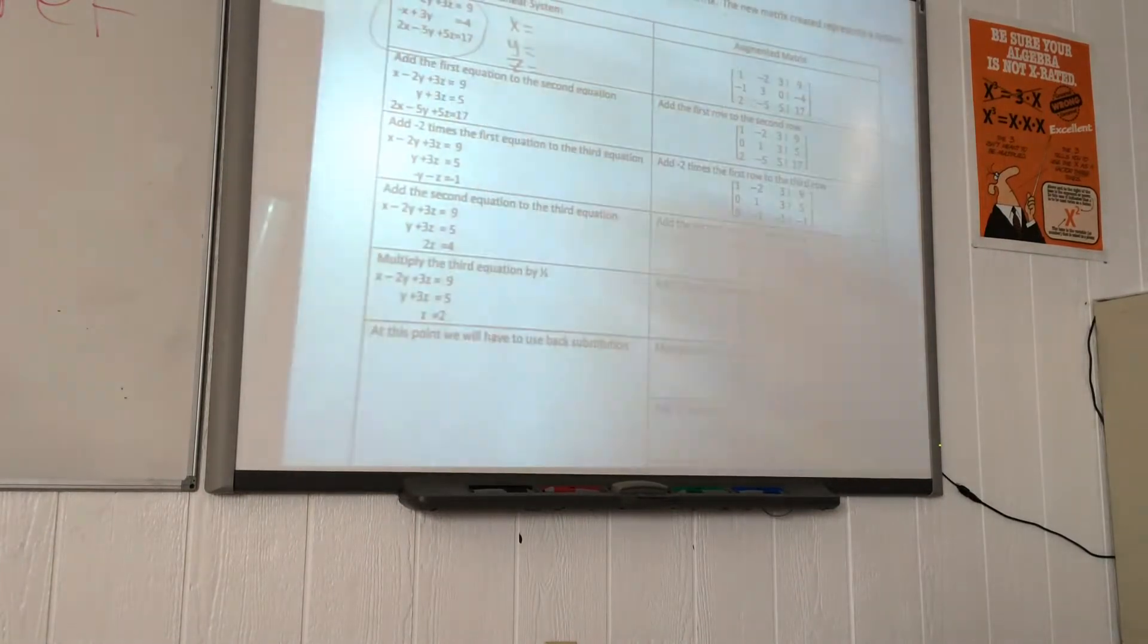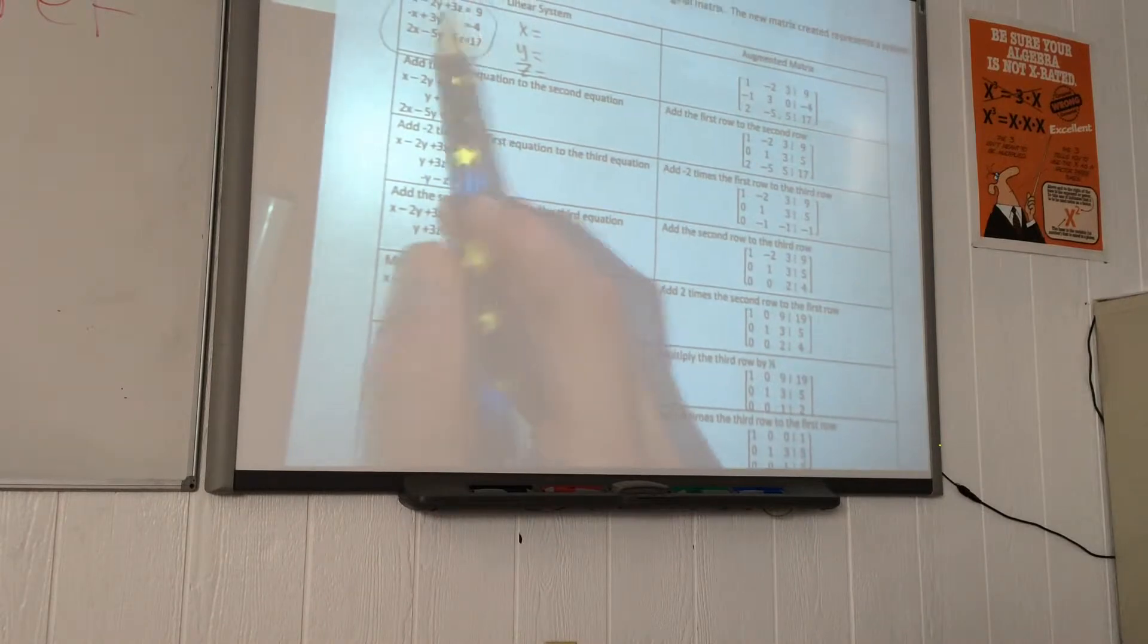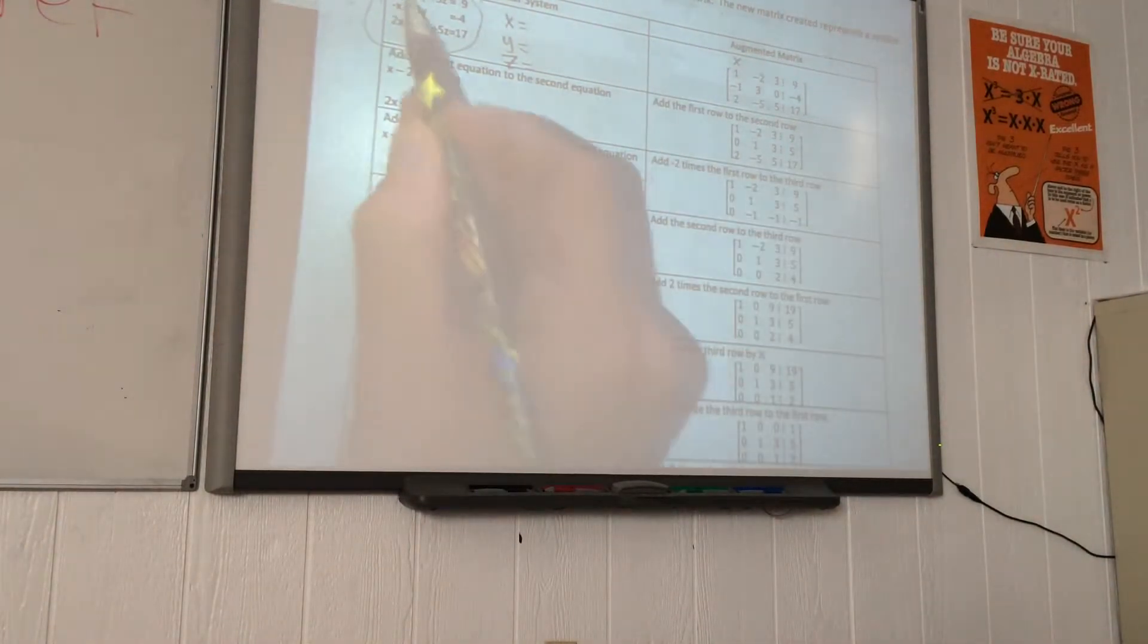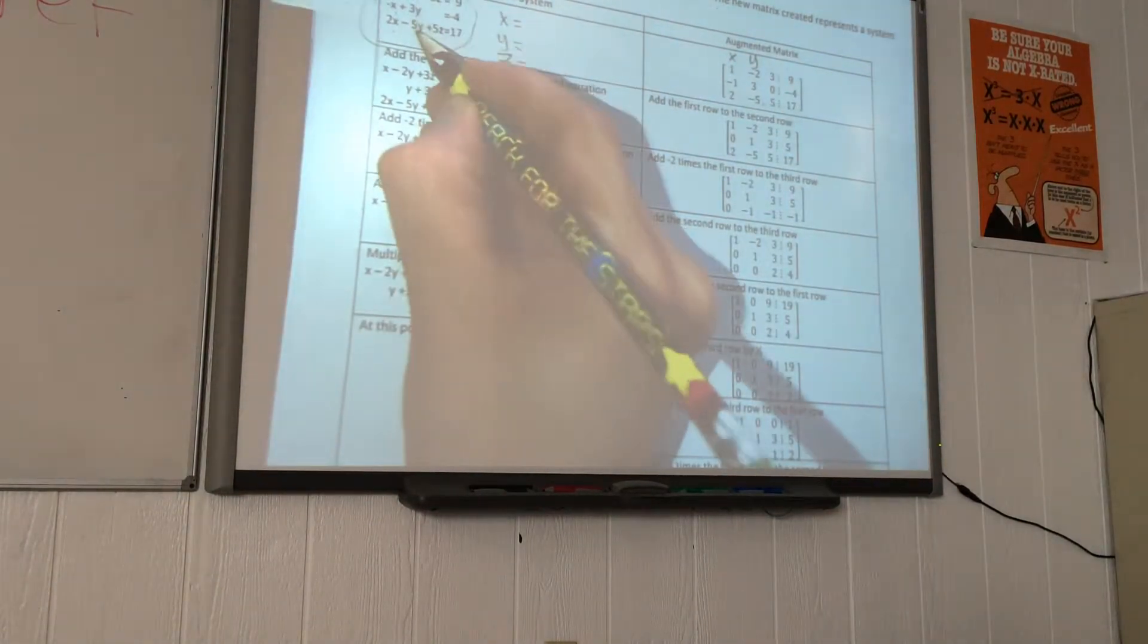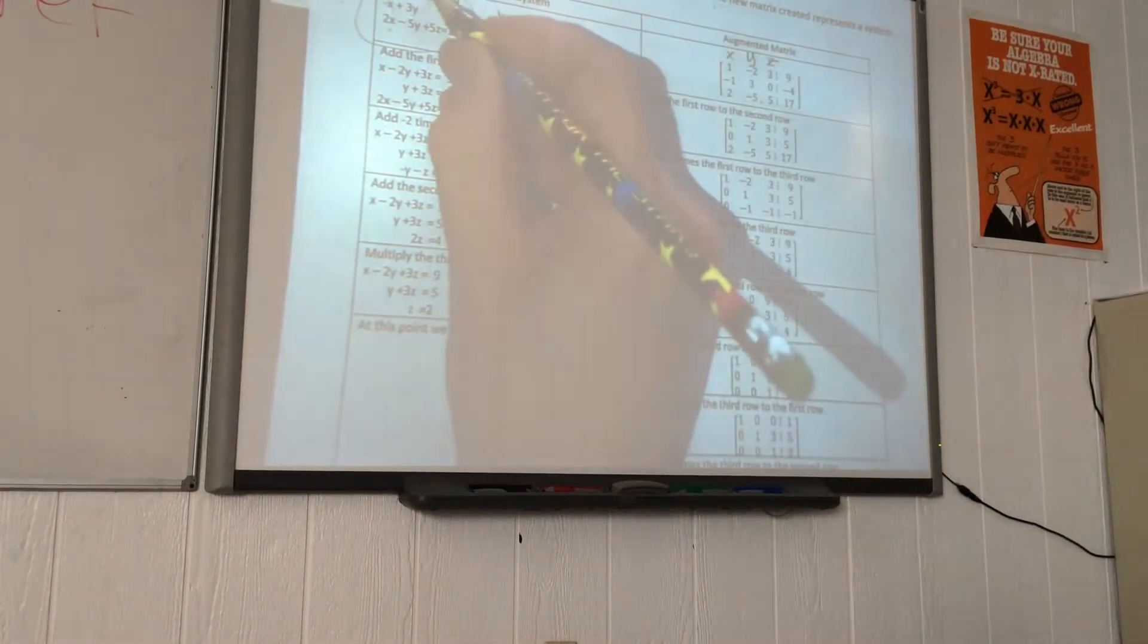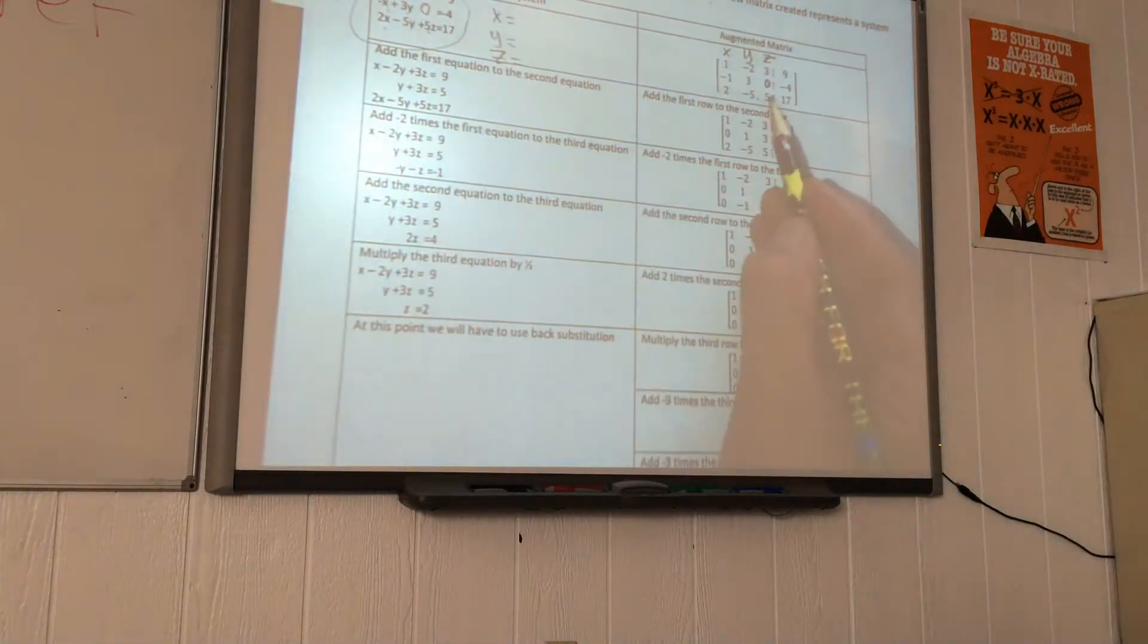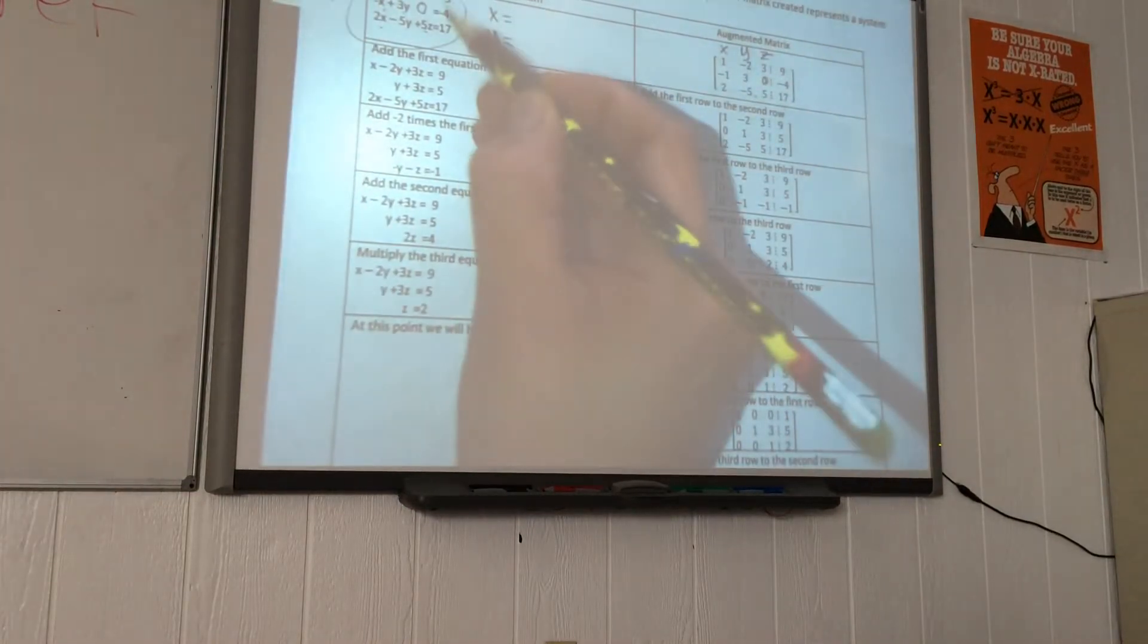Before we create the augmented matrix that you can see on the right side, we need to make sure they are lined up in alphabetical order: X, Y, Z. This represents the coefficients of all the X terms: 1, negative 1, and 2. These are the coefficients of Y terms: negative 2, positive 3, and negative 5. And these are the coefficients of the Z terms: 3, there's no Z here so there's a 0, and 5 for the third equation. On the right side, we see the constant terms: 9, negative 4, and 17.